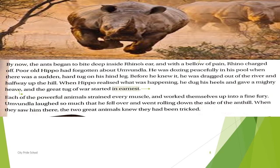When Hippo realized what was happening, he dug his heels and gave a mighty heave, and a great tug of war started in earnest. From the other side, Rhino woke up and charged, automatically pulling Hippo via the rope. Hippo couldn't control himself — he just dug his heels and showed his strength. Earnest means sincere and intense conviction — they were unknowingly part of the tug of war, pulling with all their might. That's how the actual tug of war began, all because of Umundla who had tied both hind legs.